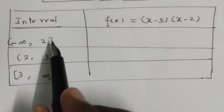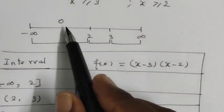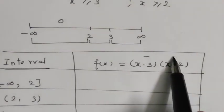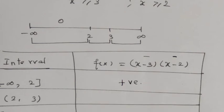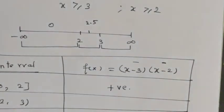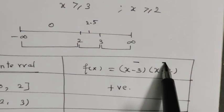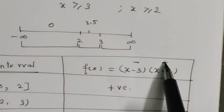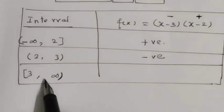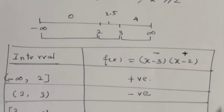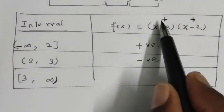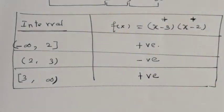For the interval minus infinity to 2, both factors are negative, so negative times negative gives positive. For interval 2 to 3, we test 2.5: 2.5 minus 3 is negative, 2.5 minus 2 is positive — negative times positive gives negative. For interval 3 to infinity, we test 4: 4 minus 3 is 1 positive, 4 minus 2 is 2 positive — positive times positive gives positive.